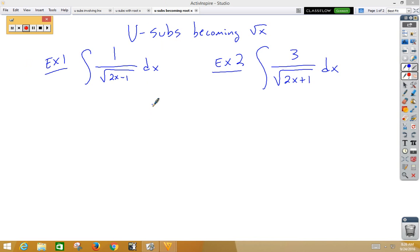So in our first example, we're looking for our inside function, which would be 2x minus 1. So u is 2x minus 1. The derivative, du, would be 2dx.